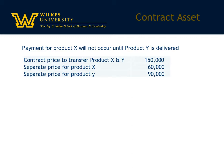This example is the other type — a conditional right. The company has the right to receive consideration because they've satisfied one performance obligation, but before they can bill the customer, they must satisfy the other obligation as well.